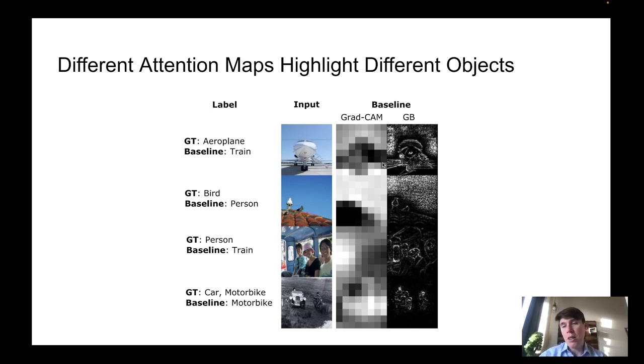The problem is that when the model is not good, the attention maps are also not good, and they can even be contradictory. For example, here, they don't show the same thing.